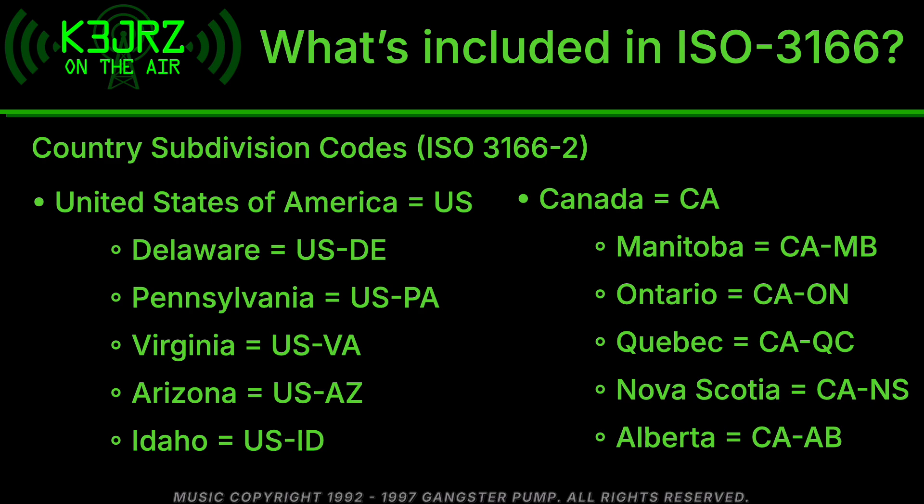Canada works the same way — their country code is CA. For Manitoba it would be CA-MB, Ontario is CA-ON, Quebec would be CA-QC, Nova Scotia is CA-NS, and Alberta is CA-AB.